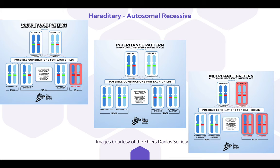If EDS is inherited through an autosomal recessive pattern, there are multiple different ways it can be passed down. Both parents can be unaffected carriers, which would result in a child having a 25% chance of being an affected person, a 50% chance of being an unaffected carrier, and a 25% chance of being unaffected. If one parent is an unaffected carrier, they have a 50% chance of the child also being an unaffected carrier. And if one parent is affected and the other is an unaffected carrier, there is a 50% chance the child is an unaffected carrier and a 50% chance the child has the disorder. This image is courtesy of the Ehlers-Danlos Society.